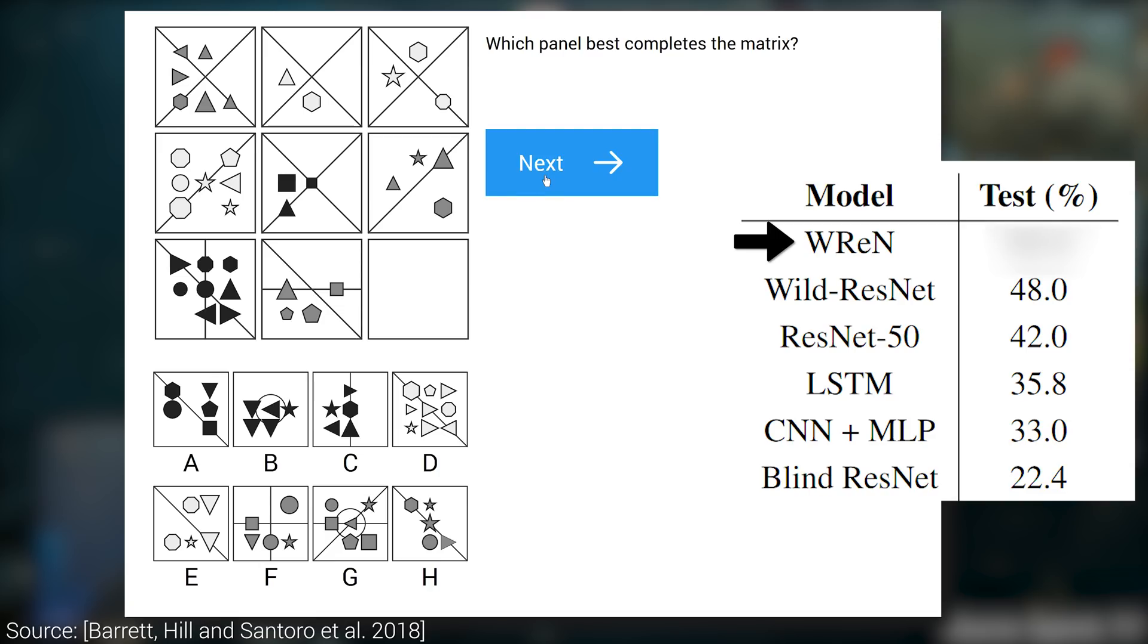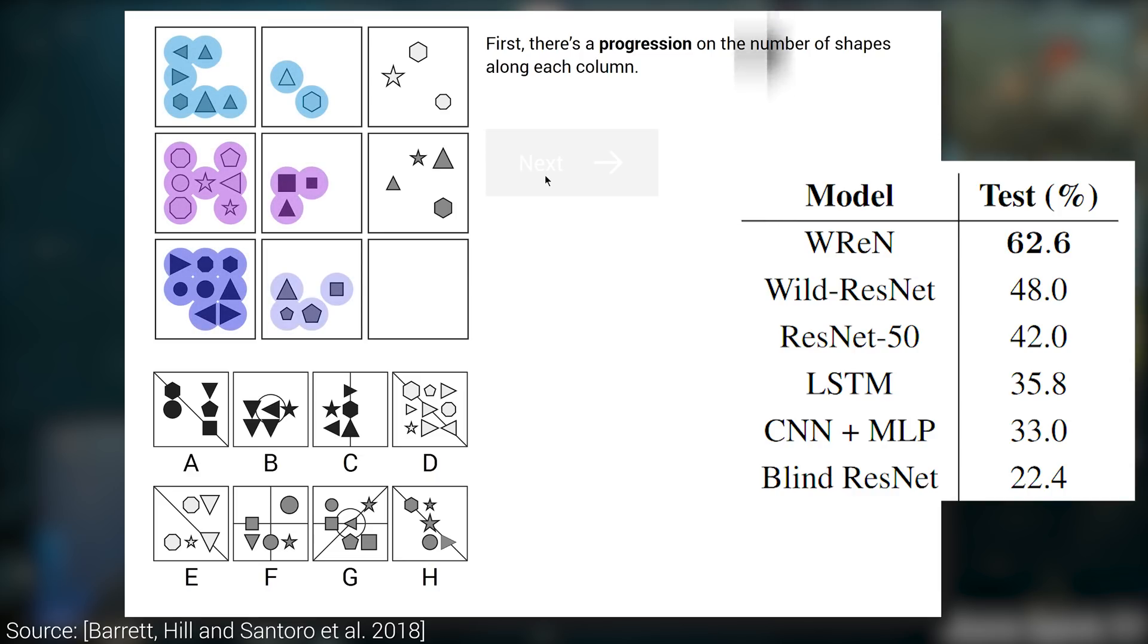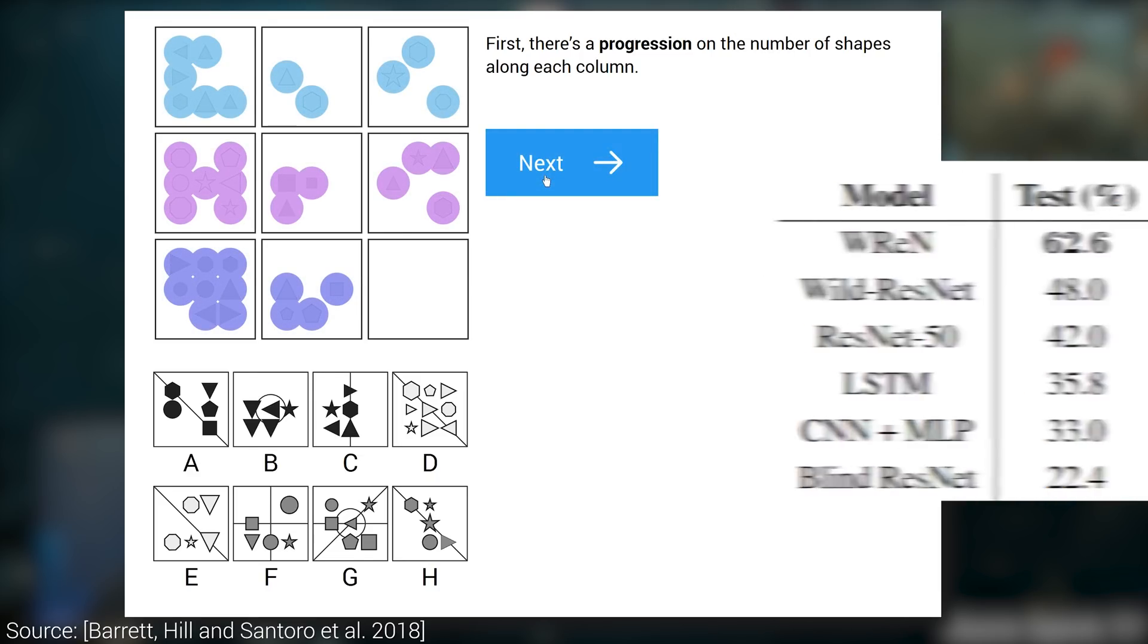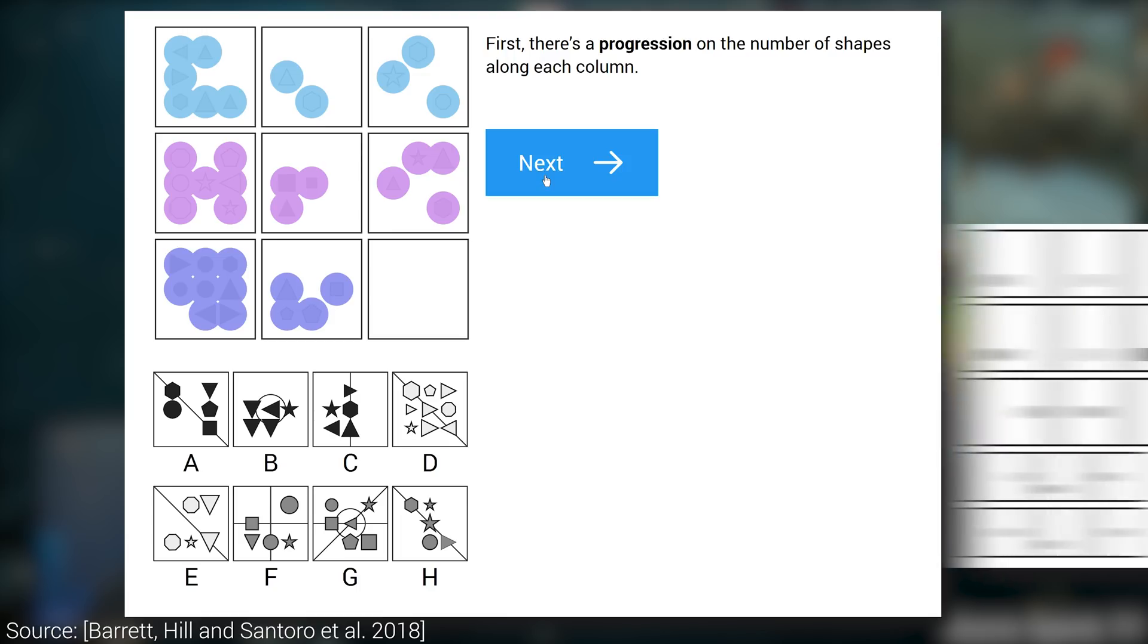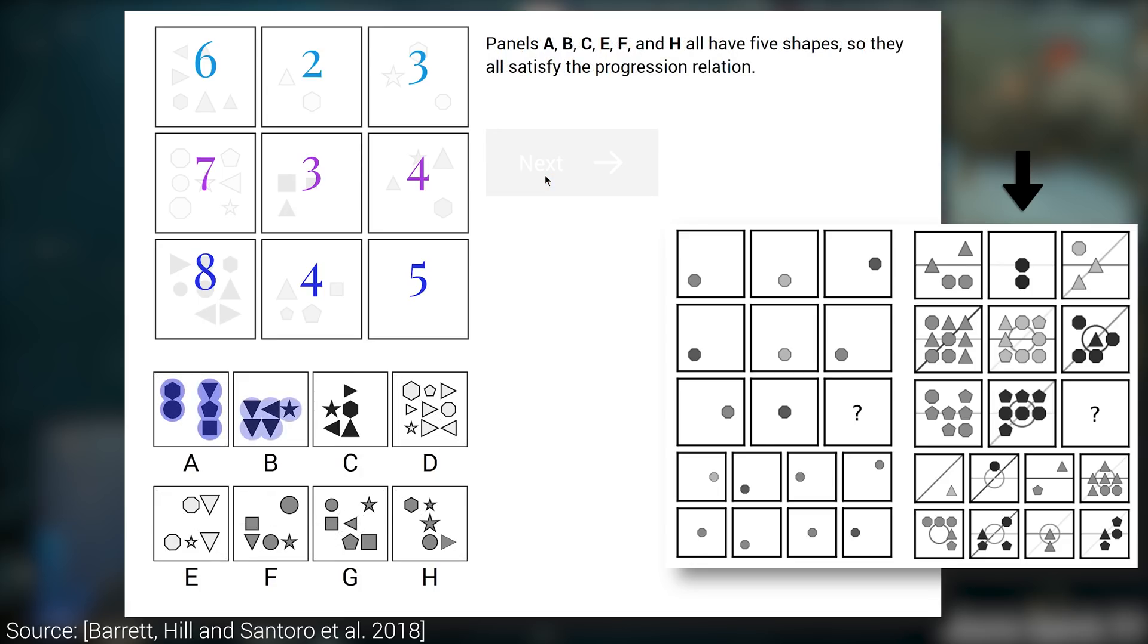And what is this accuracy we are talking about? It finds the correct solution 62.6% of the time. But it gets better, because this result was measured in the presence of distractor objects like these annoying lines and circles. This is quite confusing, even for humans, so a result about 60% is quite remarkable.